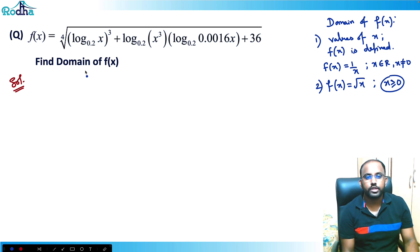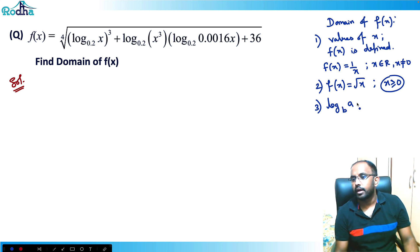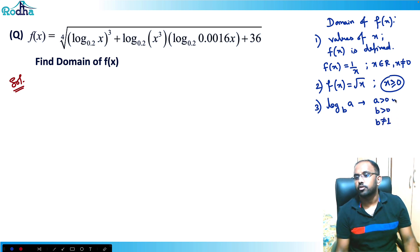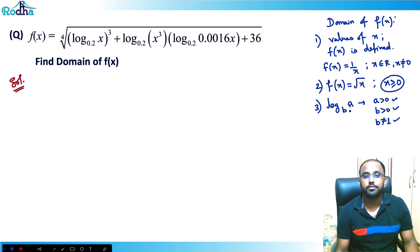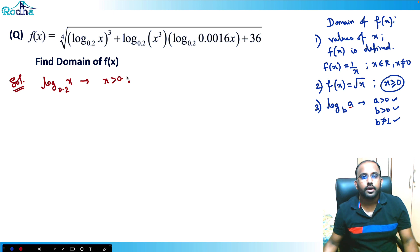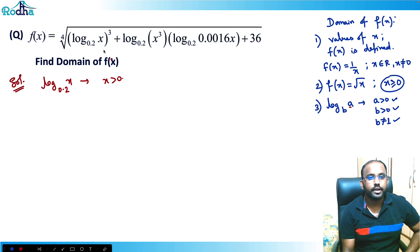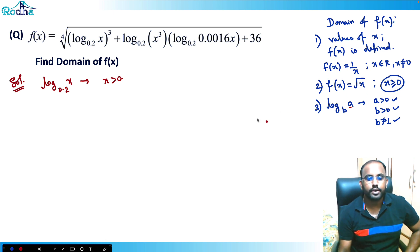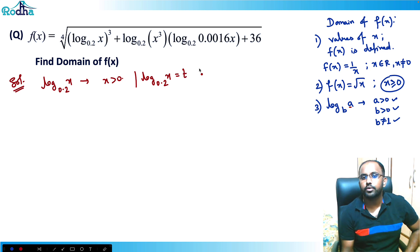In this question, we first need to handle the log condition. When we write log of a to base b, it is defined when a is positive, b is positive, and b ≠ 1. Here we have log of x to base 0.2, so x must be positive. The expression under the square root must be ≥ 0. I'll substitute t = log(x, base 0.2) to simplify.